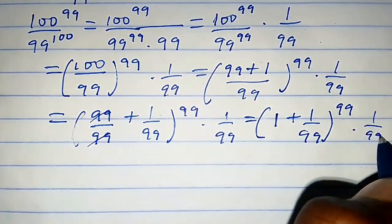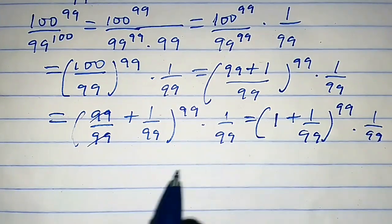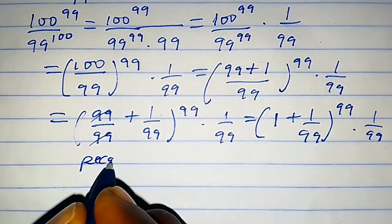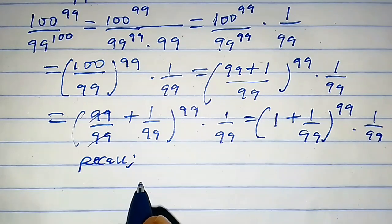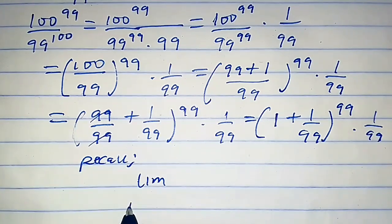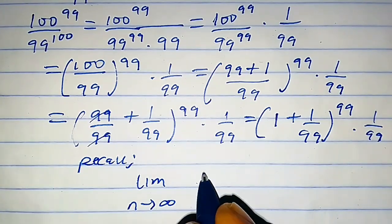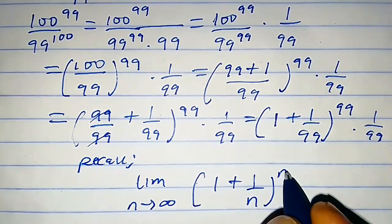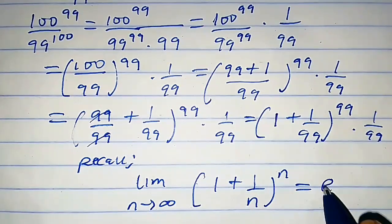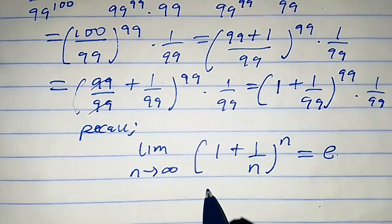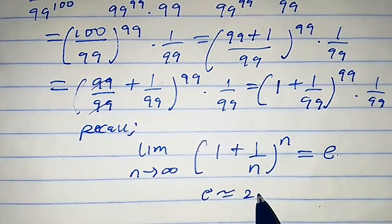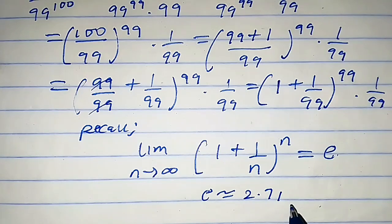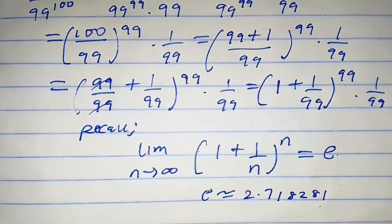Now recall that the Euler number definition is given as the limit as n tends to infinity of (1 + 1/n)^n, which equals e. This Euler number is approximately equal to 2.718281. We'll use this property.